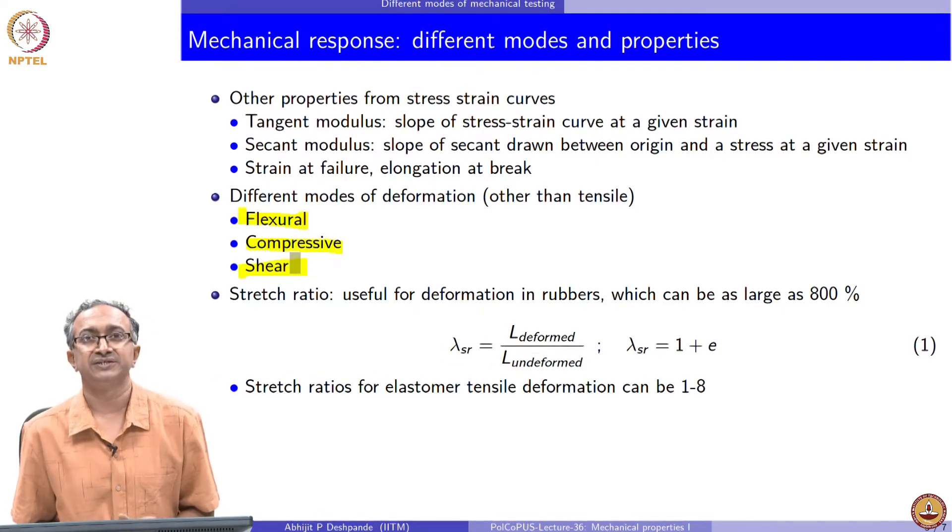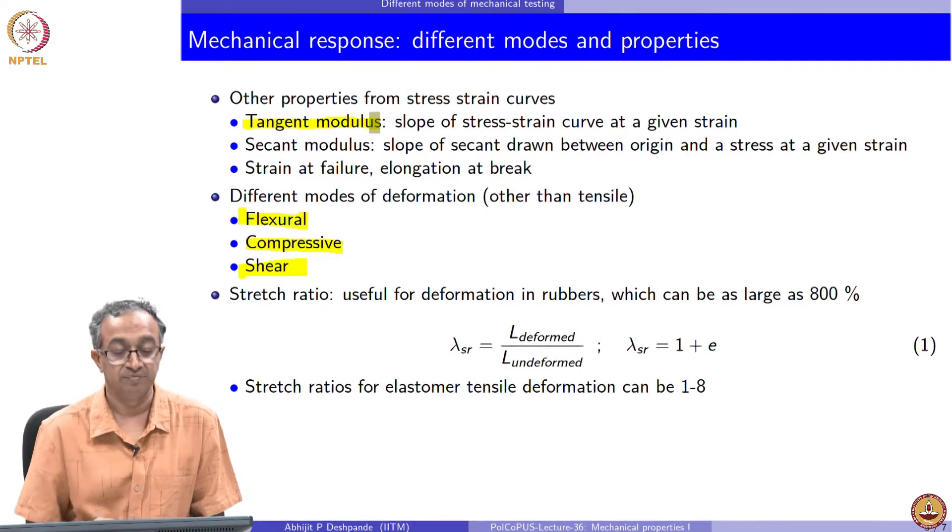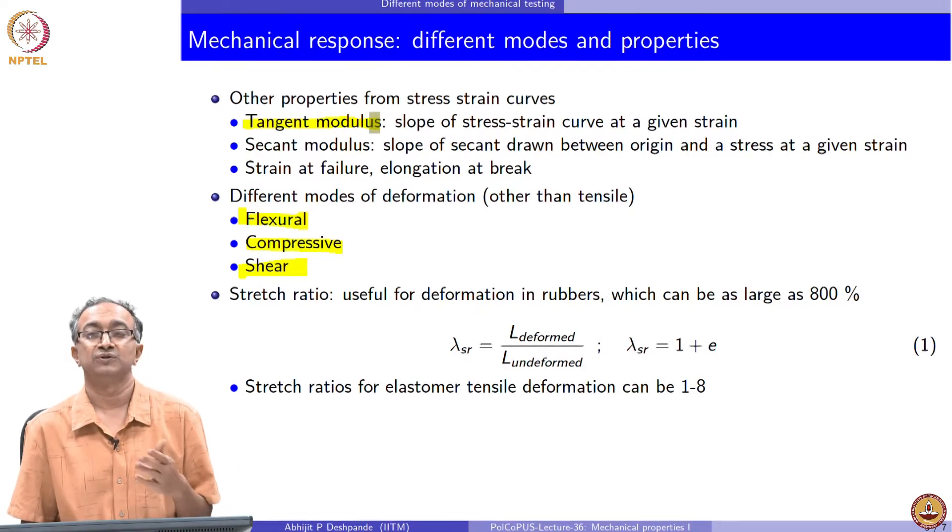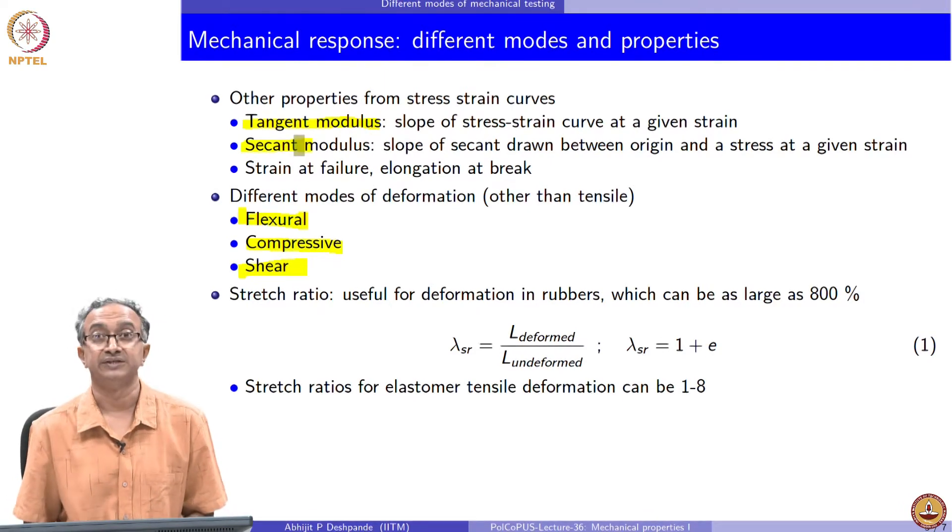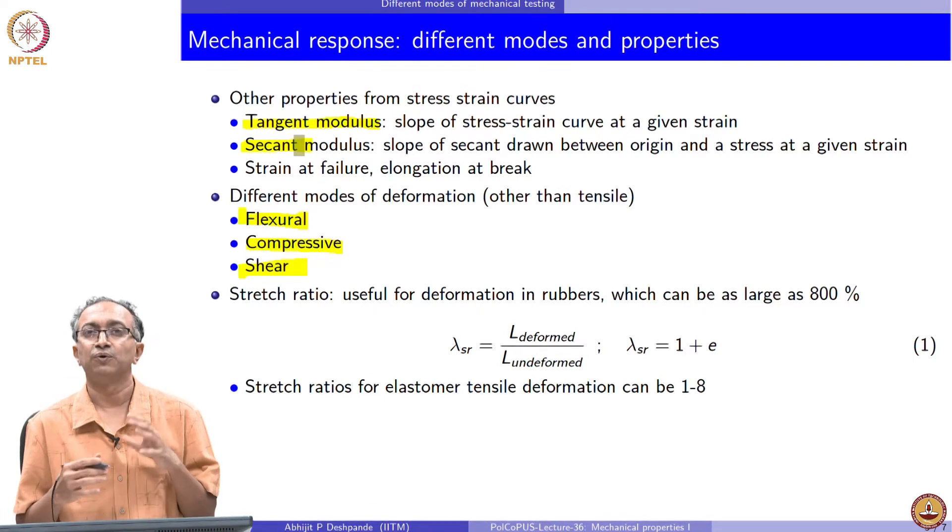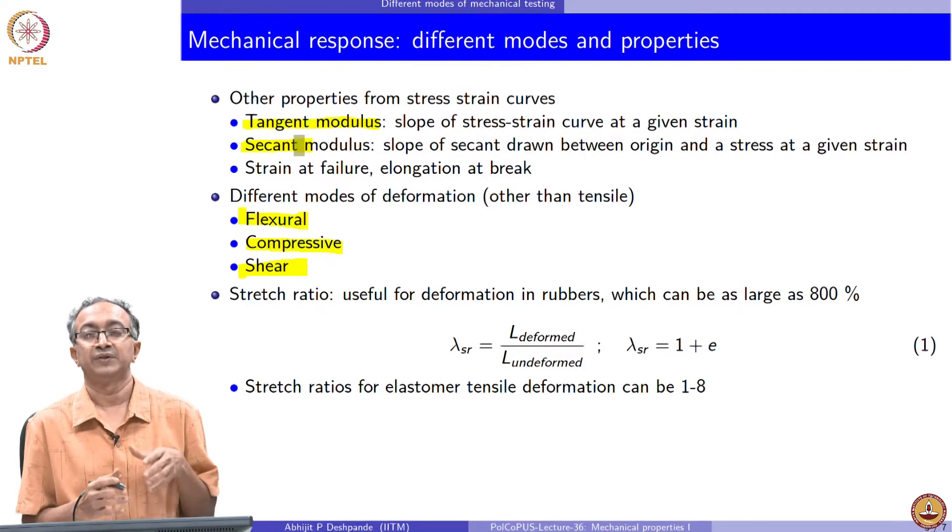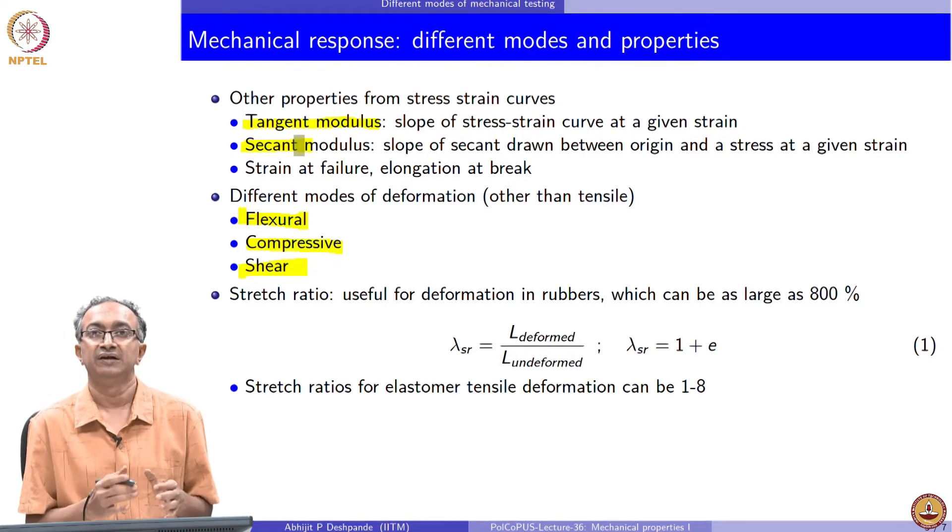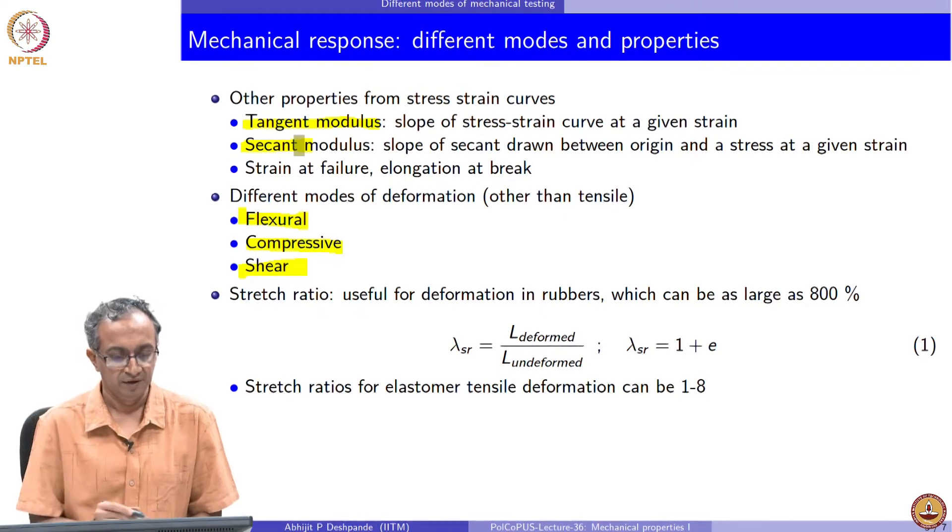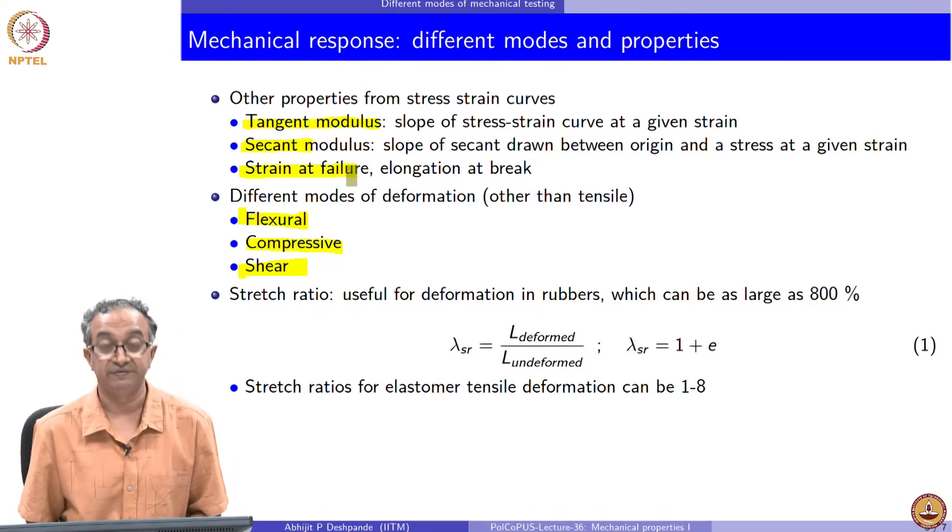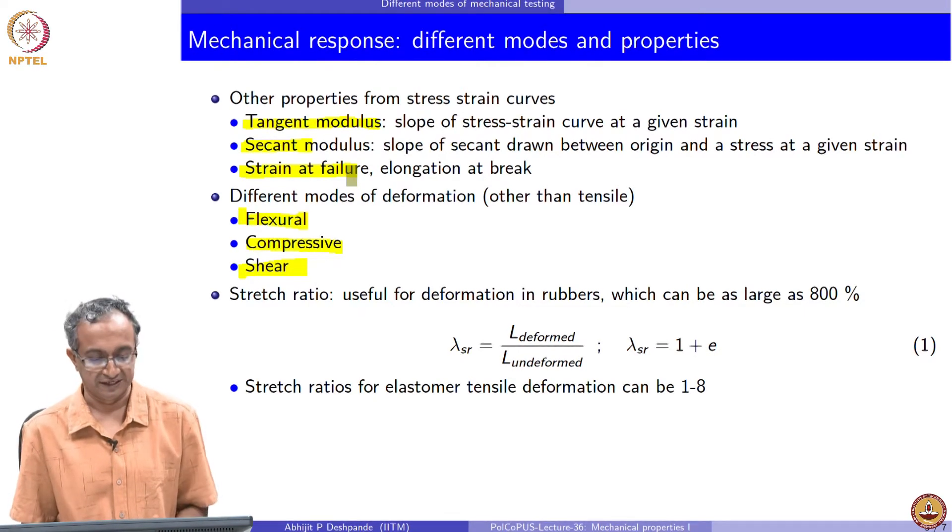With the same stress strain curves that we had looked earlier, we could also define in addition to the modulus, we could also define modulus which is tangent modulus or a secant modulus. I suggest you just go and look up these definitions. These are very standard definitions, especially when linear region is very small, then these are very useful quantitative measures for engineering decision making. We can also look at strain at failure or elongation at break to quantify the nature of mechanical response of the material.